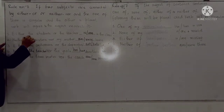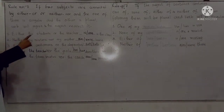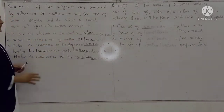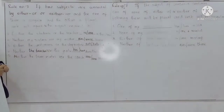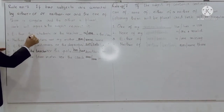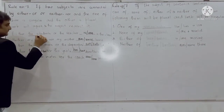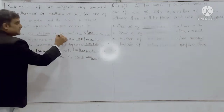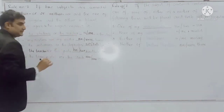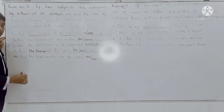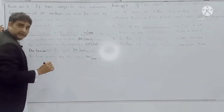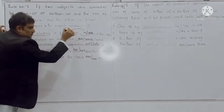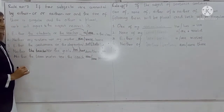Look at the example: 'Either the students or the teacher is responsible.' Here, 'the students' is one subject and 'the teacher' is another subject. The subject nearest to the verb is 'the teacher,' which is singular. So a singular verb will be used: 'Either the students or the teacher is in the class.'